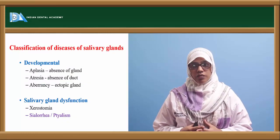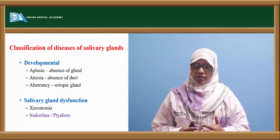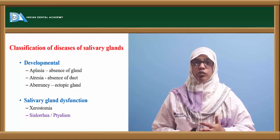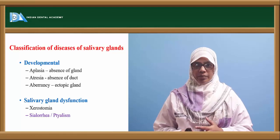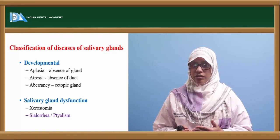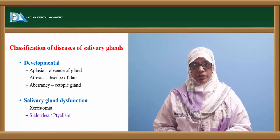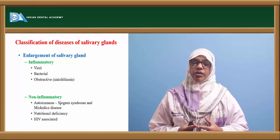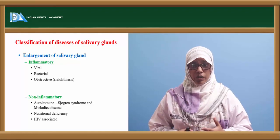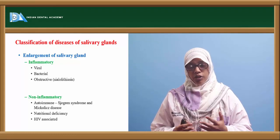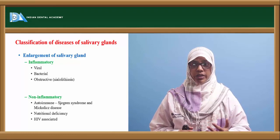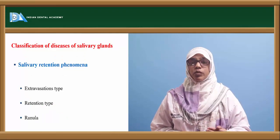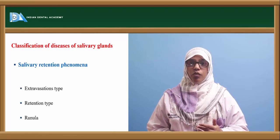Moving on to the classification of diseases of the salivary gland: depending on development, they can be classified as aplasia (absence of gland), atresia (absence of duct), or ectopic gland. Salivary gland dysfunction is of two main types: xerostomia (decrease in salivation) or sialorrhea/ptyalism (increase in salivation). Enlargement can be inflammatory — due to viral, bacterial causes, or obstruction from calculi — or non-inflammatory, including autoimmune conditions like Sjögren's syndrome, Mikulicz syndrome, nutritional deficiency, or HIV-associated. Salivary retention phenomena include mucocele and ranula.